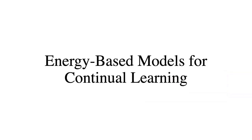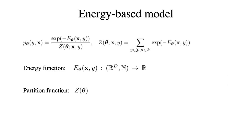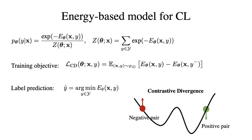In our paper, we propose to use an energy-based model as a building block for continual learning. In our energy-based model, we optimize the joint distribution of input image X and label Y. E is the energy function that maps the input image and label to a scalar value, and C is the partition function for normalization. In practice, we found that the conditional probability already achieves good results.